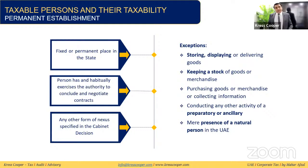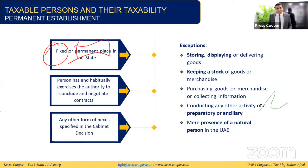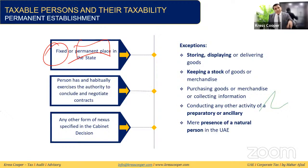Permanent establishment is defined as any fixed or permanent place of business in the UAE. This includes a branch, office, factory, management base where decisions are taken, or any infrastructure expected to last more than six months. If a non-resident person has such a PE in the UAE, the income of that PE will be subject to UAE corporate tax.